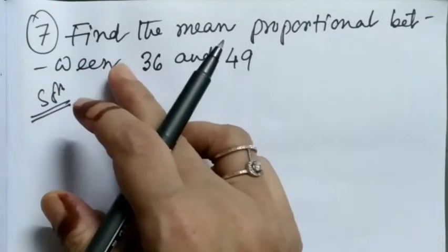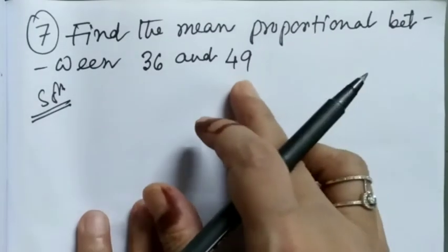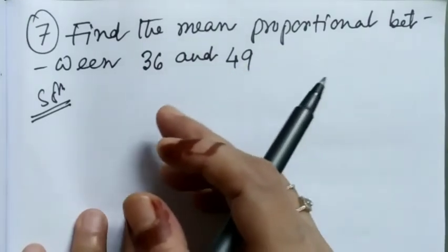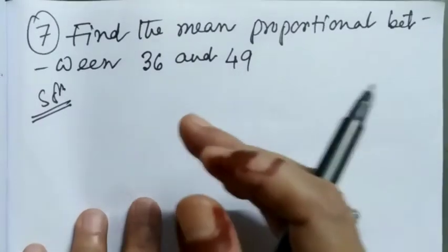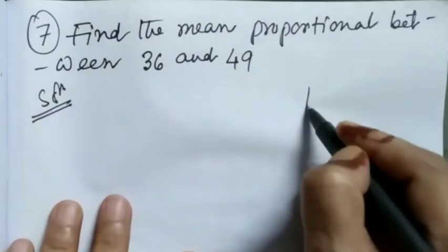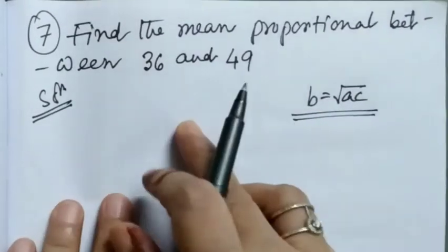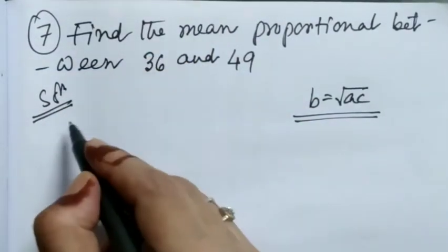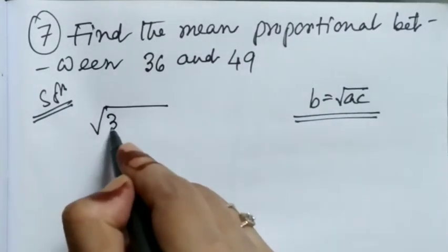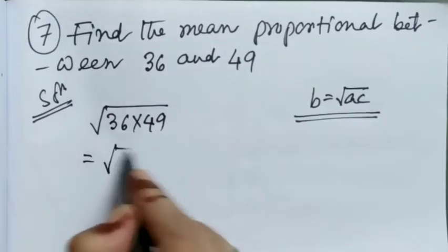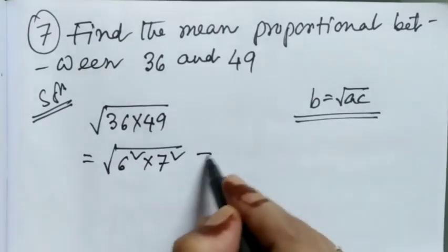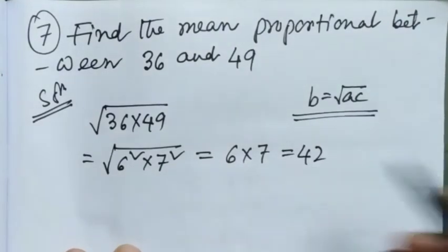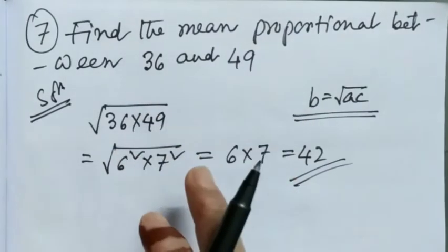Question number 7, find the mean proportional between 36 and 49. We know if a, b, c are three quantities which are in continued proportion, then the value of b which is mean proportional, we can get by using the formula b is equal to square root of ac. Now by using formula, I am getting mean proportional is equal to square root of 36 into 49, which equals square root of 6 square into 7 square, which equals 6 into 7, equals 42.